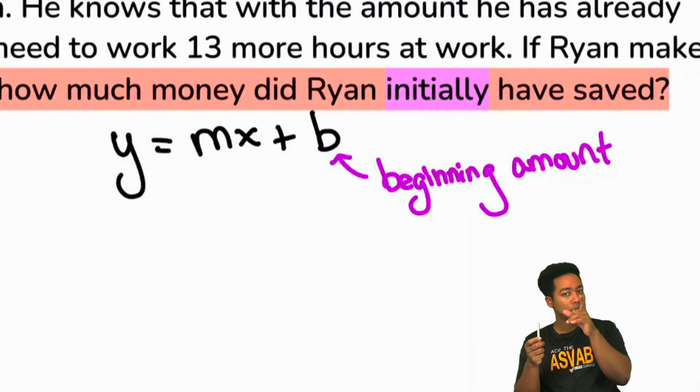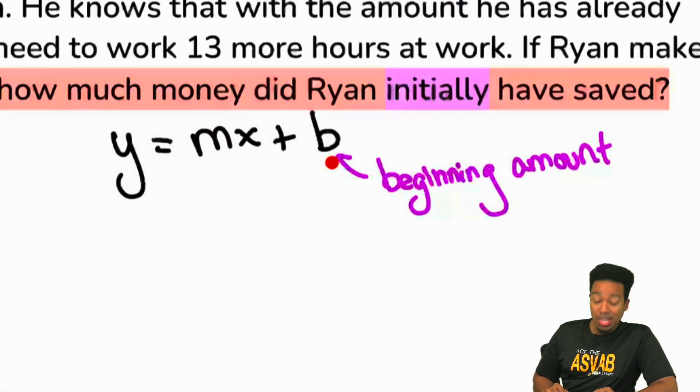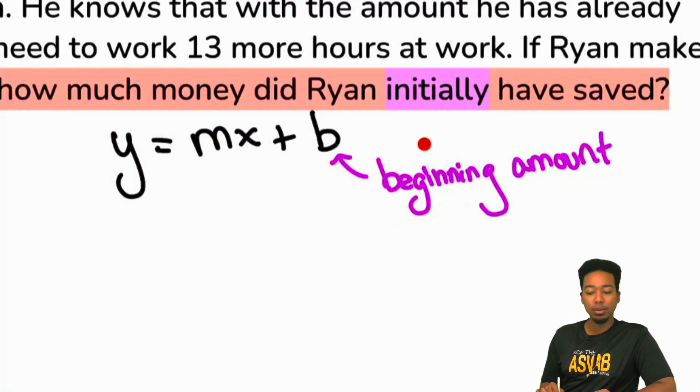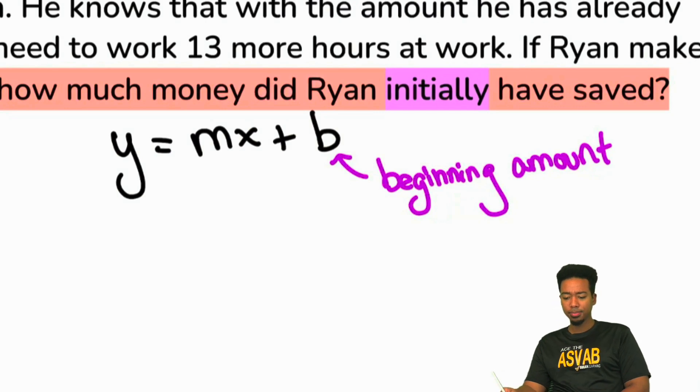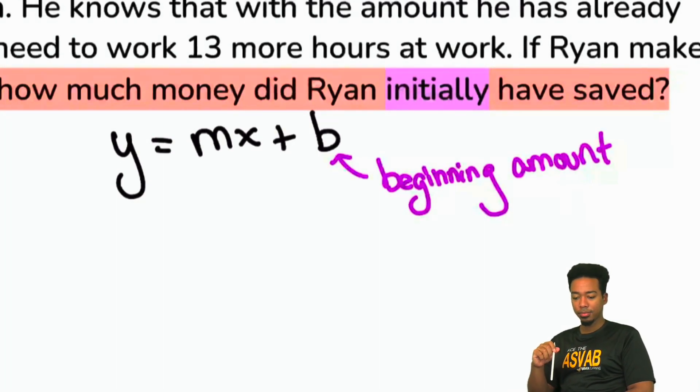We have to know a little bit of word knowledge here to take some of these hints, especially when it comes to setting up an equation. But my party people, yes or no, do you understand now that what we're being asked to find is the b in this formula, the beginning amount because of the initial amount that we're being asked to find? Does that make sense?